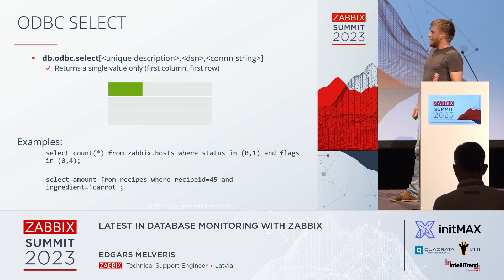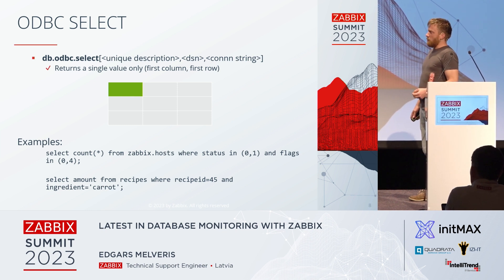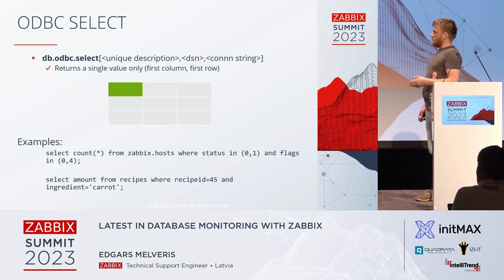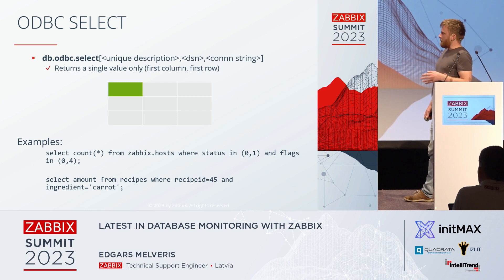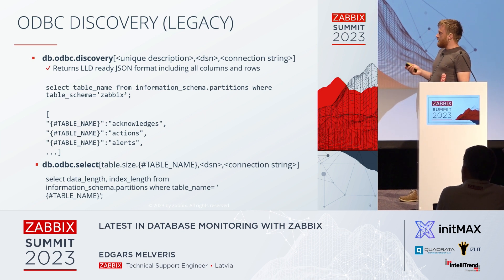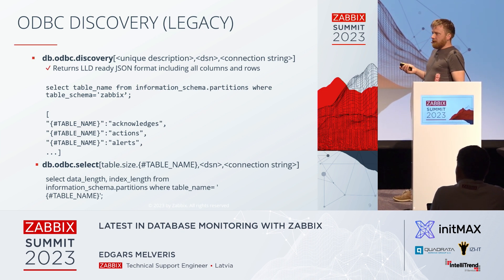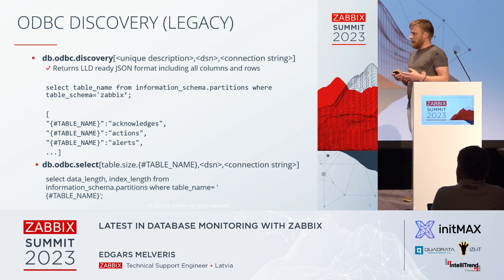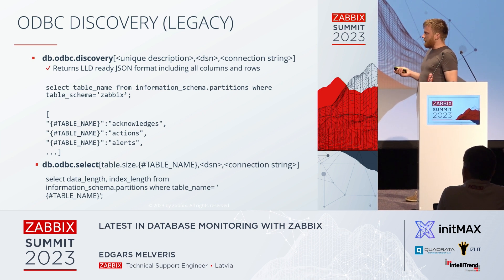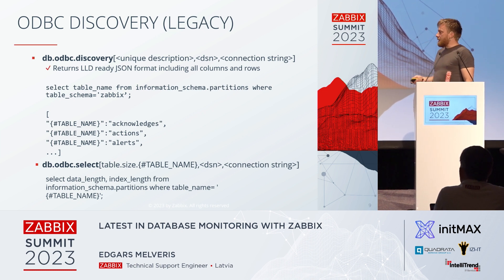The items you can use to actually get data out of a database: DB ODBC select is one of the simplest — it returns just one value. If the query returns more, Zabbix will use only the first column, first row; others are ignored. It also offers built-in discovery, but this is a legacy approach. Whatever is returned from the query, columns become LLD macros, which can be used immediately in item prototypes. You create those simple ODBC select items, fill in parameters from the discovery, and those items should start working.